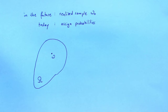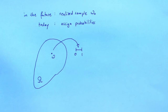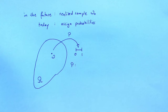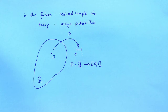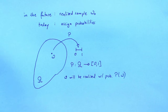Probabilities are numbers between zero and one. We can assign a probability to Omega using a function P. P is called the probability function. P assigns to each element in the sample space a number between zero and one that we interpret as a probability. So we say Omega would be realized with probability P of Omega.